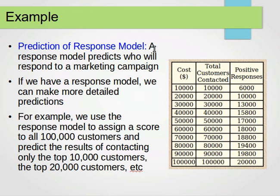For the response model, let's assume we have a model that predicts who will respond positively to a marketing campaign. We have 100,000 customers with their information, and the model predicts who will respond. The idea is to check performance with and without the model — i.e., randomly sending advertisements versus using the model to predict the most likely responders.